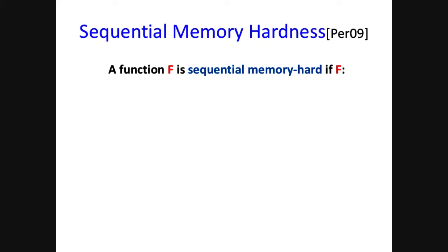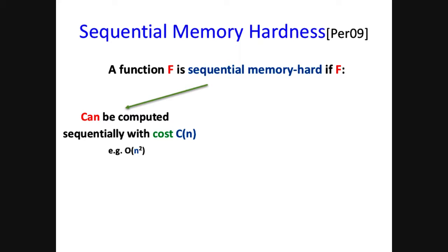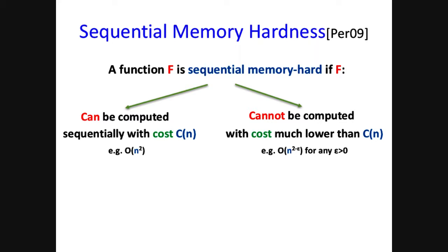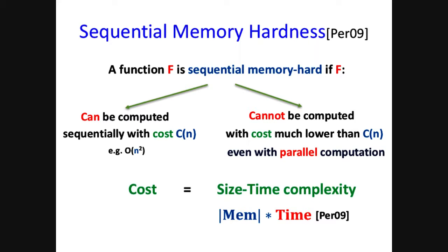Motivated by this, Percival in 2009 proposed the notion of sequential memory hardness. A function f is called sequential memory hard if, on the one hand, it can be computed sequentially with a cost of, for example, O(N²), but on the other hand, it cannot be computed with a cost much lower—like O(N^(2−ε)) for any constant ε > 0—even if the adversary can do parallel computation. Here the cost means size-time complexity, which is the product of memory size used and running time.